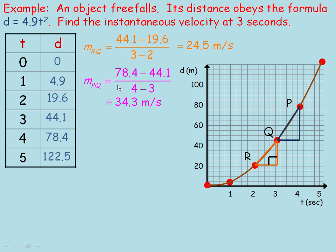From 3 to 4 seconds, subtracting those distances and times gives a slope of 34.3 meters per second — that's the average rate of change from the third to the fourth second. Now, I've drawn a tangent line to find the real tangent line slope at Q at 3 seconds. Notice that the tangent is steeper than the first secant, so the velocity we're looking for is bigger than 24.5. But the tangent slope is not as steep as the 3-to-4 average rate of change, so the actual instantaneous velocity at 3 seconds must be smaller than 34.3 — somewhere between 24.5 and 34.3.